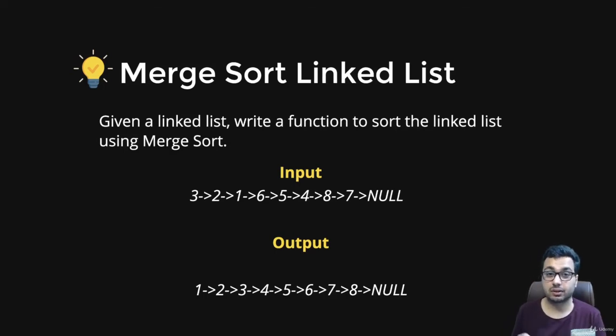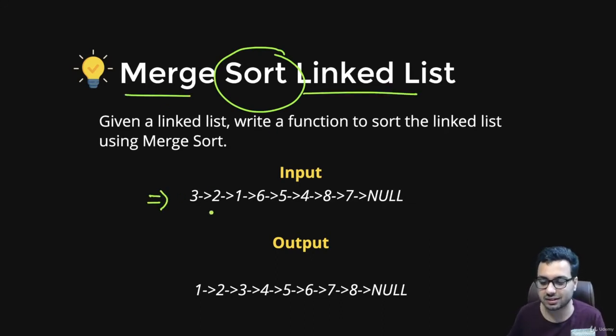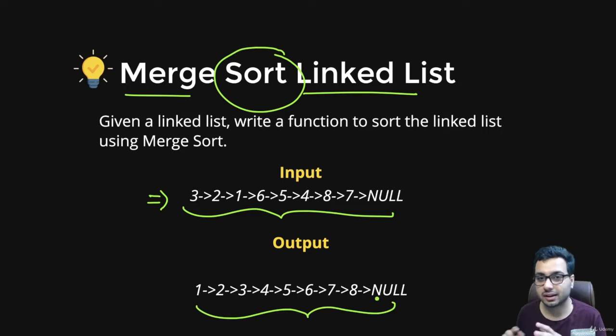In this lecture we are going to talk about sorting a linked list. I'm going to use my favorite method which is merge sort, so we are going to implement merge sort on a linked list. Given an unsorted linked list like this one, we want to sort all the elements so that the linked list becomes something like this one. We are not going to create a new linked list; we are going to change the pointers inside this particular linked list.